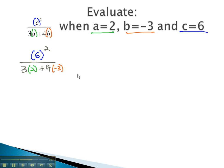We can simplify, we'll do these both together, the numerator and denominator. The numerator is an exponent, the denominator has multiplication. 6 squared is 36, 3 times 2 is 6, plus 4 times negative 3.